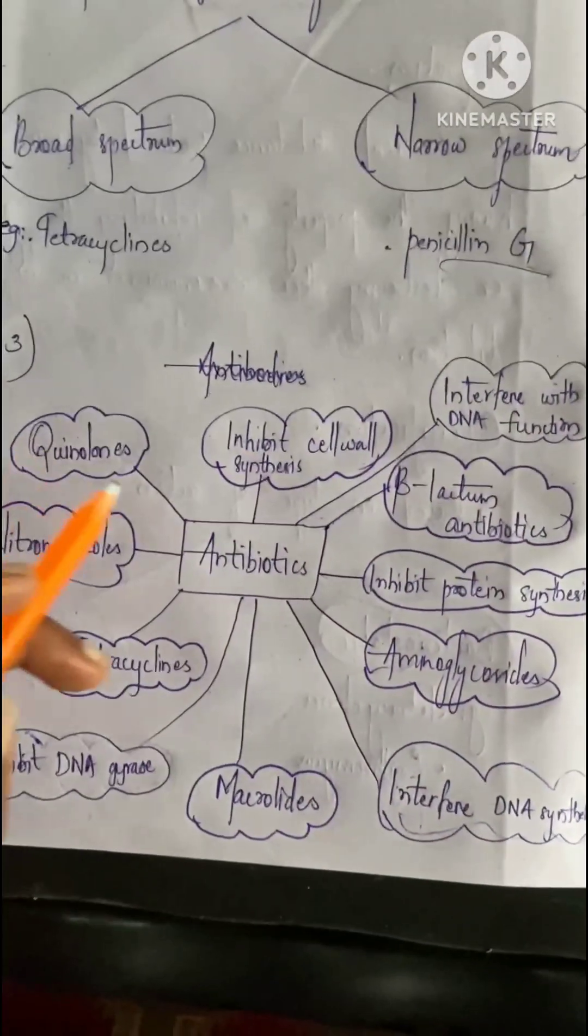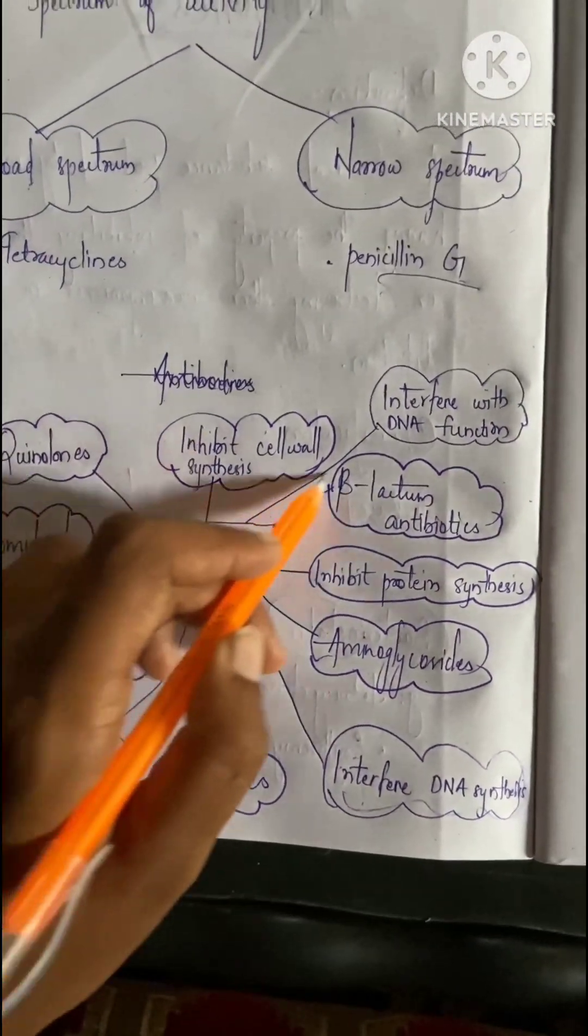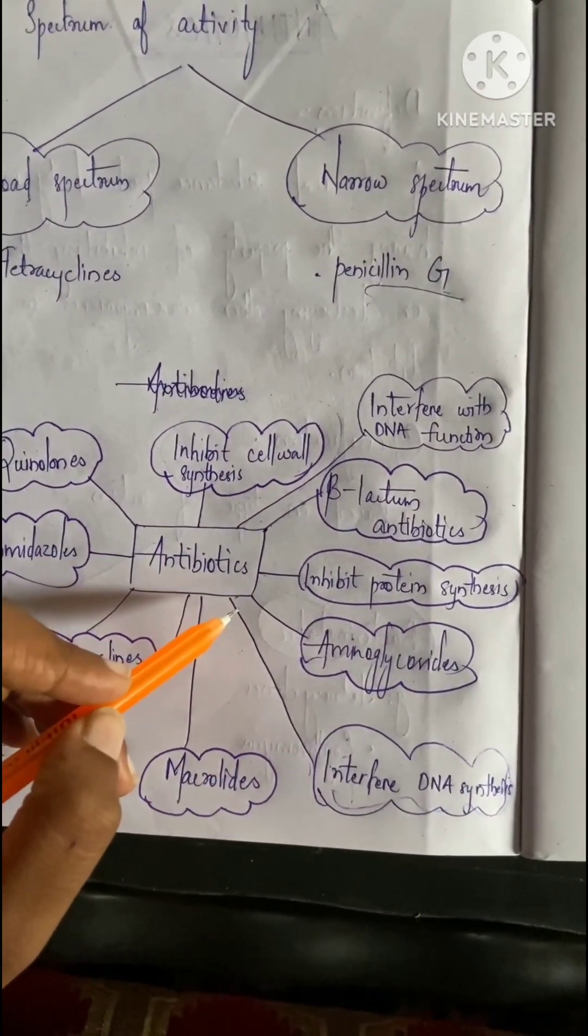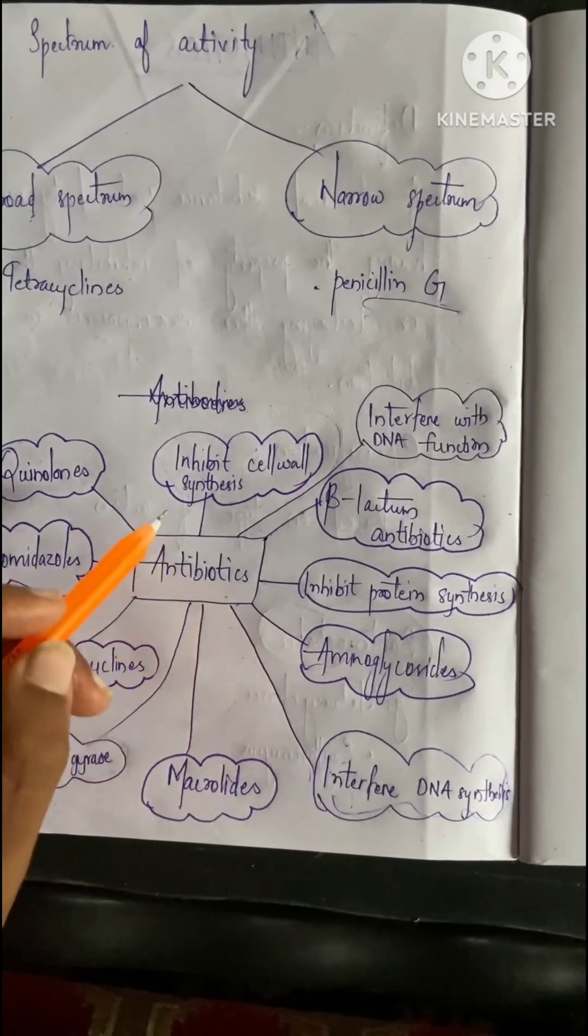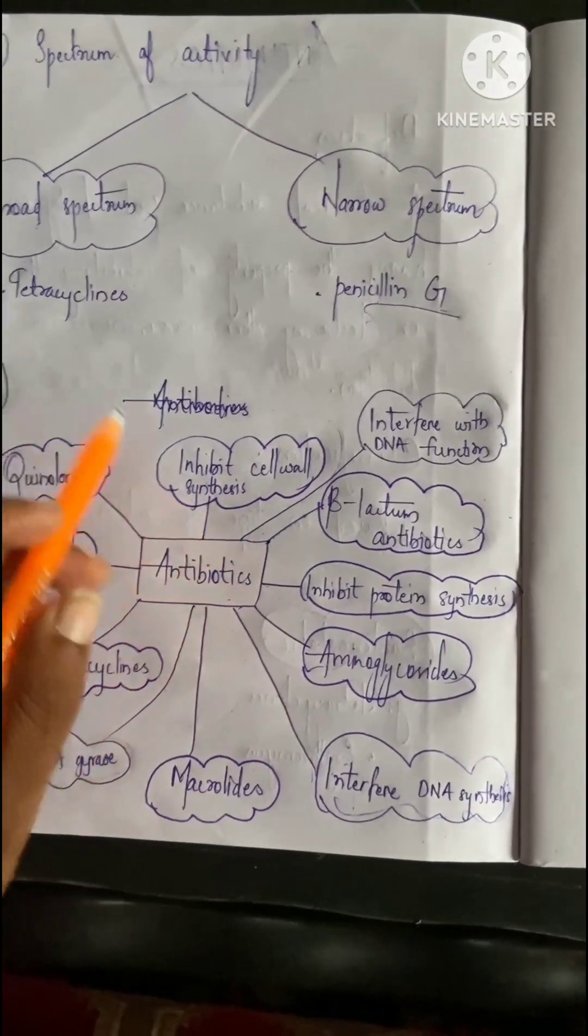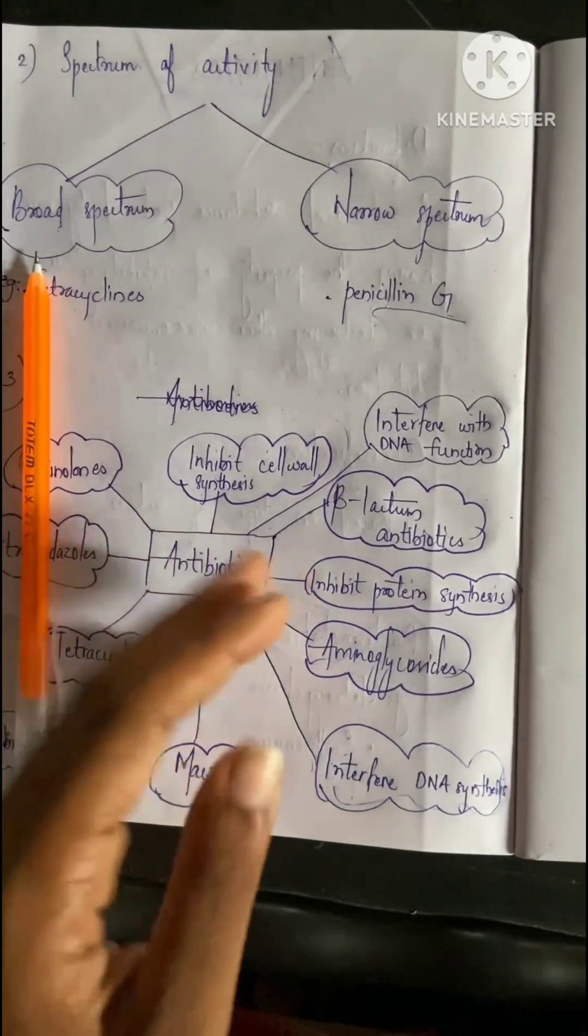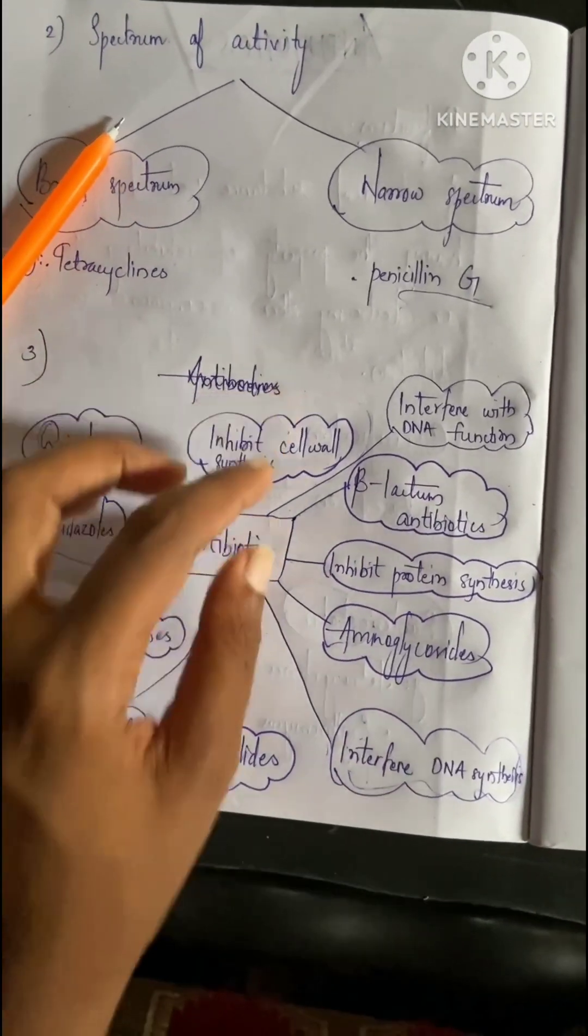Next classification: inhibit cell wall synthesis. The microbes that enter the body have cell wall synthesis, and if we inhibit that, the microbe cannot grow in our body. Examples are penicillin, vancomycin, and cephalosporin.